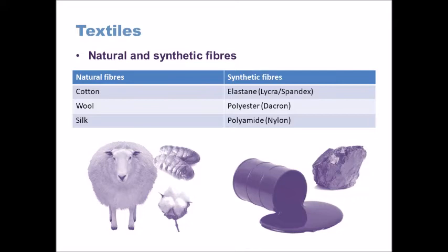Synthetic fibres, on the other hand, are manufactured — they are man-made. Three examples of these are elastane, which is also known by the brand names lycra or spandex; polyester, which might be known as dacron; and polyamide, which you'll probably more commonly know as nylon, the trademark given to it by the Dupont company.